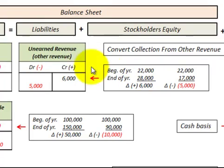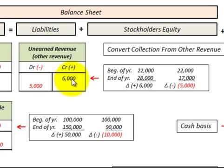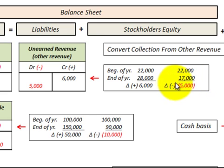For example, with unearned revenue: at the beginning of the year we had a $22,000 balance, and at end of year $28,000, so we had an increase of $6,000 — we credit unearned revenue for $6,000. In the case where we had a beginning balance of $22,000 and an end-of-year balance of $17,000, we'd have a reduction of $5,000, so we would debit or reduce our unearned revenue by that amount.